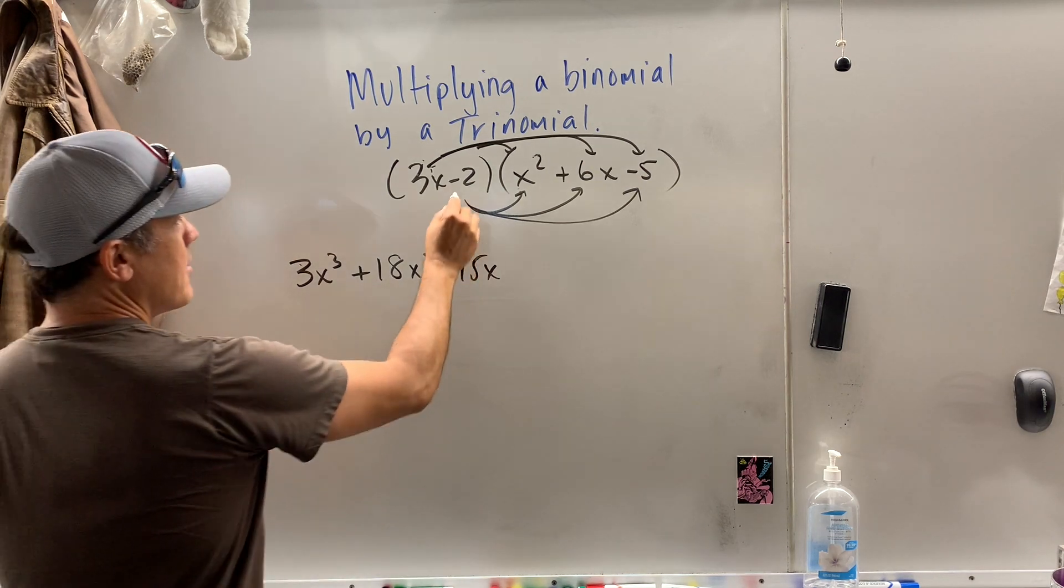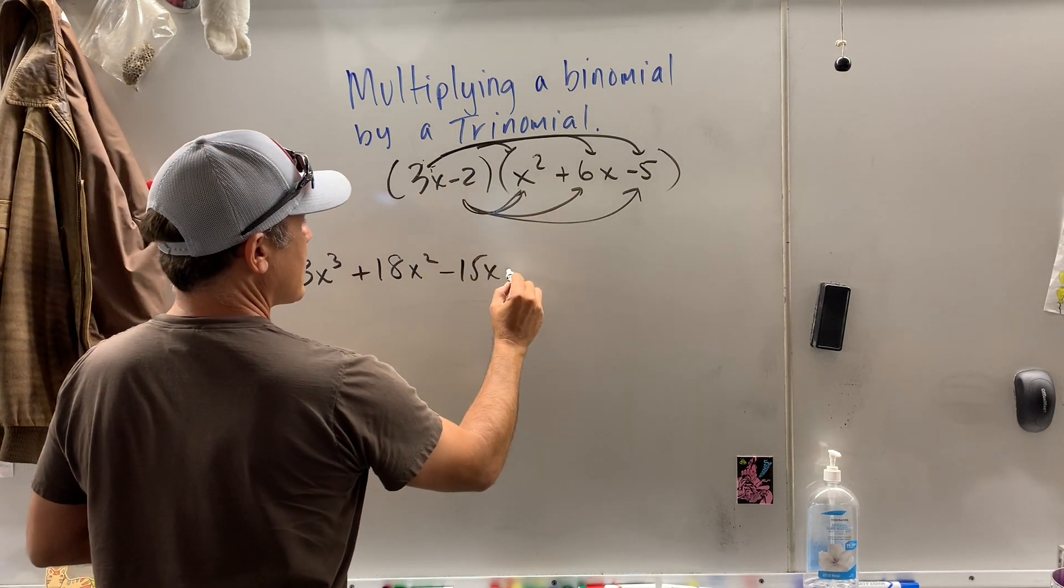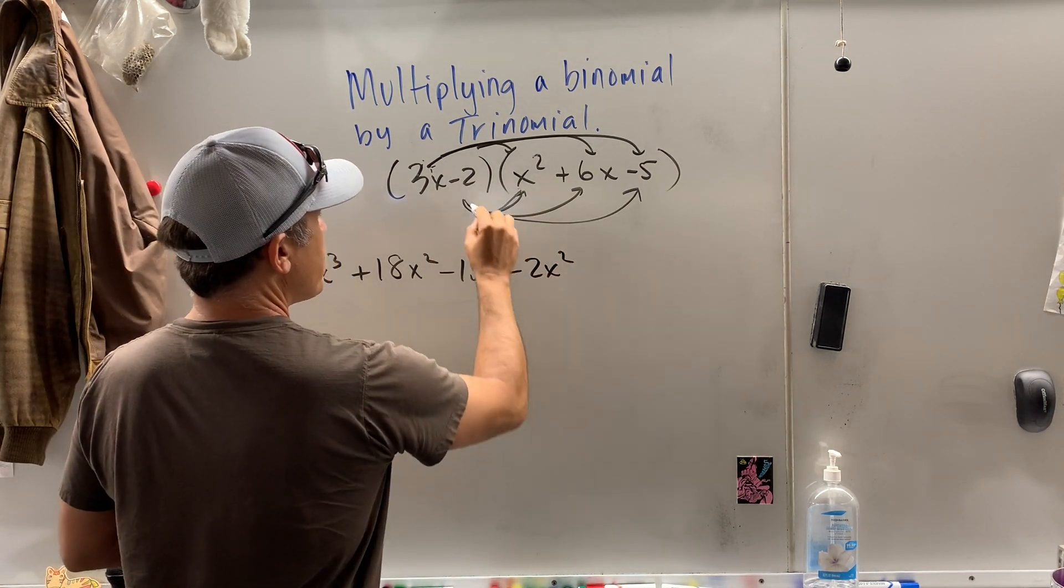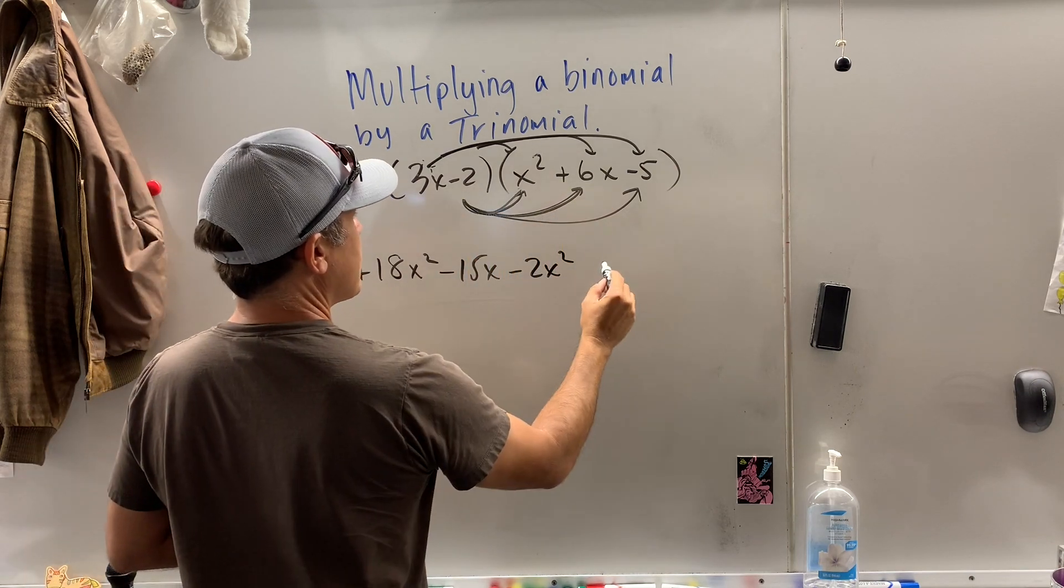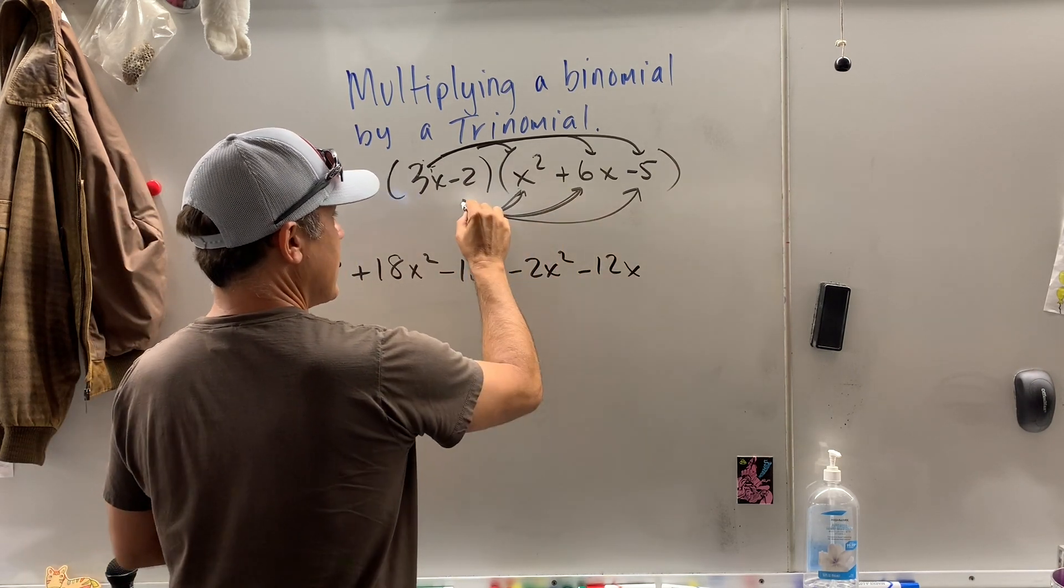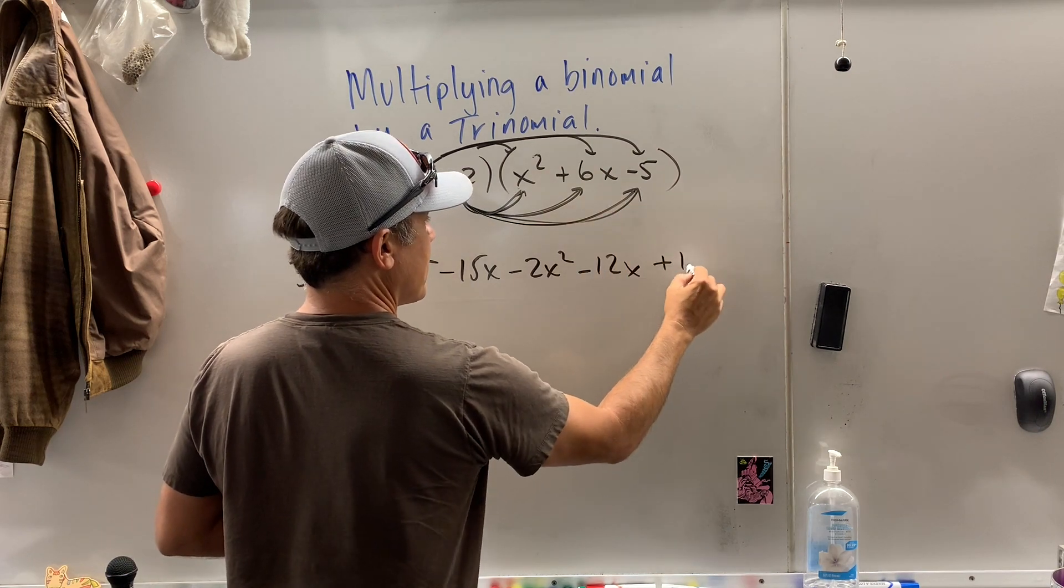Take a little deep breath. Now we come in here. Negative 2 times x squared is negative 2x squared. Negative 2 times 6x is negative 12x, and negative 2 times negative 5 is plus 10.